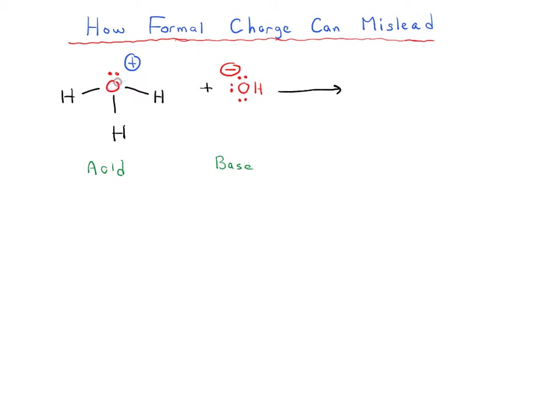Well, it has to do with the fact that formal charge is misleading. We assign a positive charge to our oxygen based on formal charge. Remember, formal charge equals valence electrons minus unpaired electrons minus one-half bonding electrons, which in the case of oxygen is 6 - 2 - 1/2(6) equals 6 - 5 equals +1.